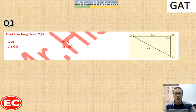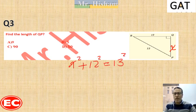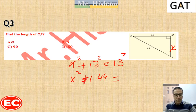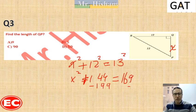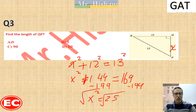Question 3: one leg is missing, so let's call it X. X squared plus 12 squared equals 13 squared, so X squared plus 144 equals 169. Subtracting 144 from both sides, X squared equals 25. Taking the square root, X equals 5.